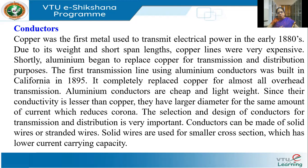The first aluminium conductors were used in California in 1895, and then aluminium completely replaced copper. Aluminium had many advantages — it was cheaper and lightweight. Since its conductivity is lesser than copper, the diameter was more to carry the same current, and because of this, the corona effect — the breakdown of air around the conductor — was also reduced. All these made aluminium a very good choice compared to copper.